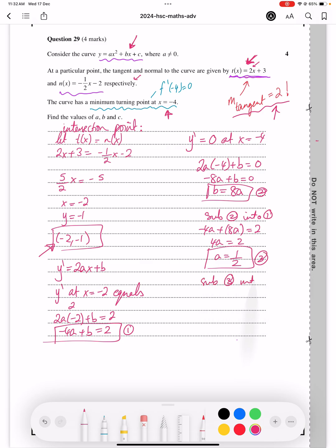Sub 3 into 2, and so therefore that gives us b as being equal to 8 multiplied by half, which is 4.